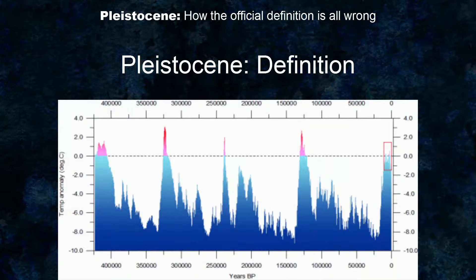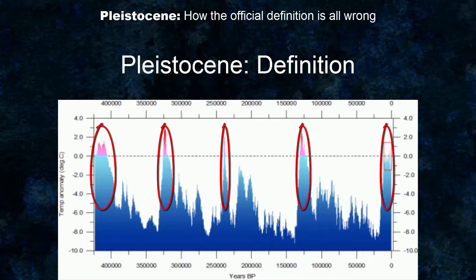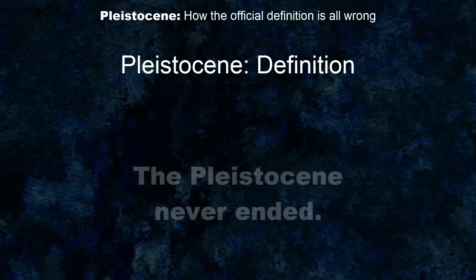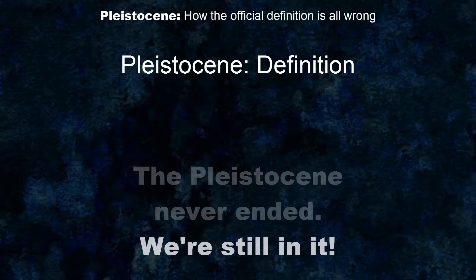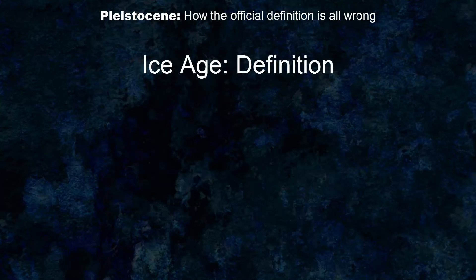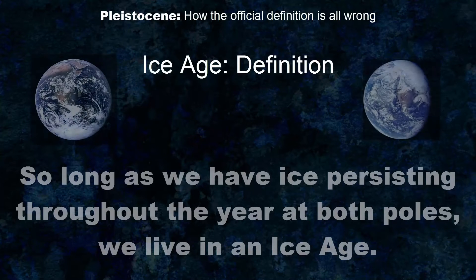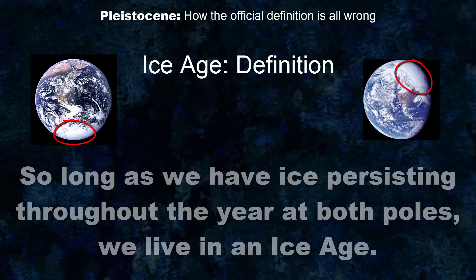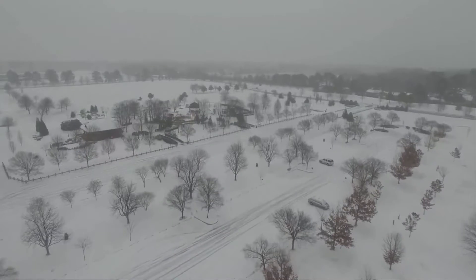Because the Pleistocene contains both glacials and interglacials, and because the Holocene is merely one of a series of interglacials during the same ice age event, effectively the Pleistocene never ended. The definition which has it end 12,000 years ago is thus artificial and contrary to the fact that the same ice age which gave the Pleistocene its meaning is still ongoing. One key definition of ice age states that so long as we have ice persisting throughout the year at both poles, we live in an ice age. And because interglacials have a nasty habit of ending, when the Holocene ends and those two little white things still persist at the poles, we will be headed for the next glacial period.